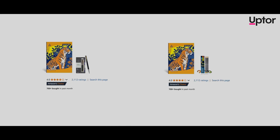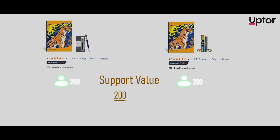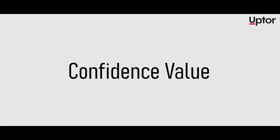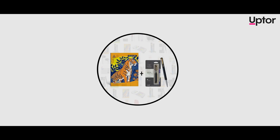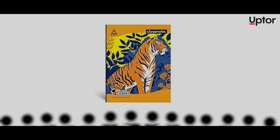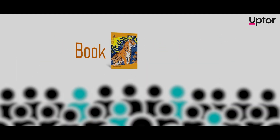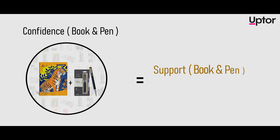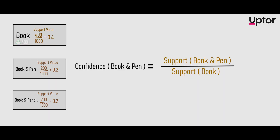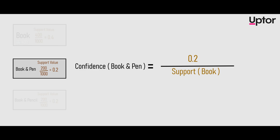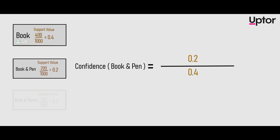Now let's look at the book-pencil combo to purchase with the combination. We've added a pair of two combinations which gives us the exact transaction count. The confidence value formula is: confidence of book and pen equals support of book and pen divided by support of book. In our case, support of book-pen is 0.2 divided by support of book which is 0.4, giving us a confidence value of 0.5.